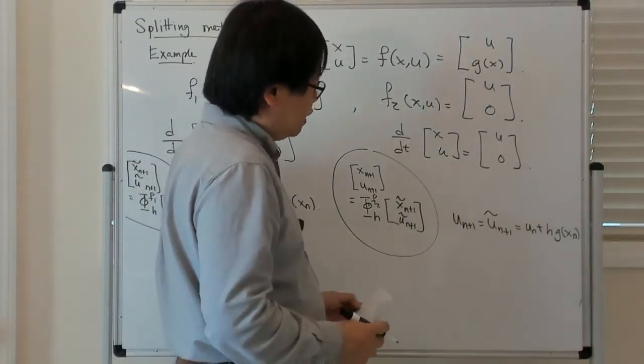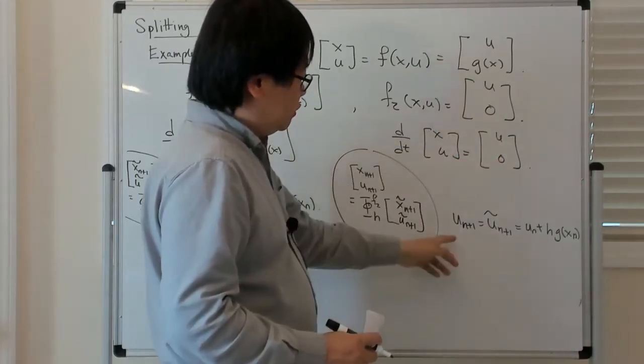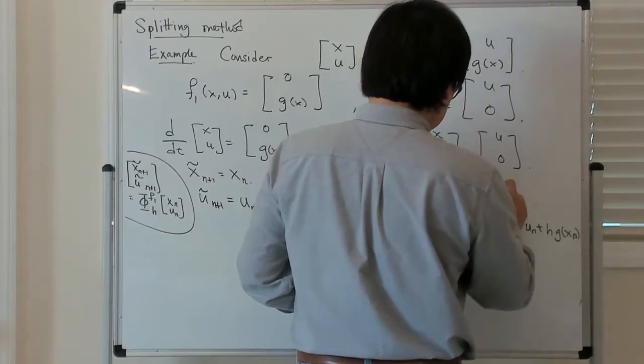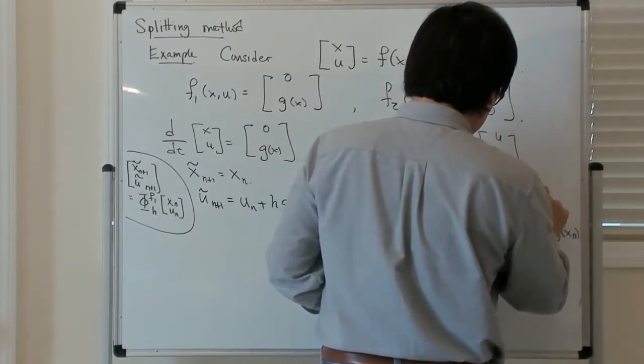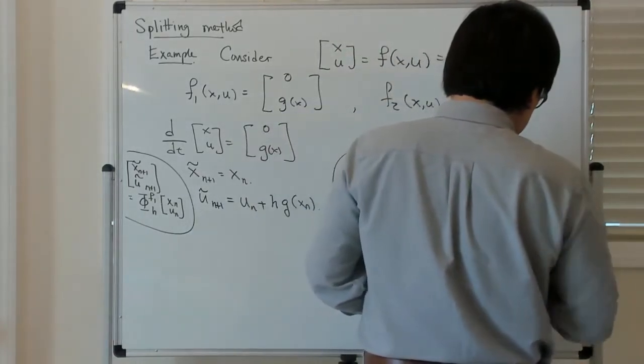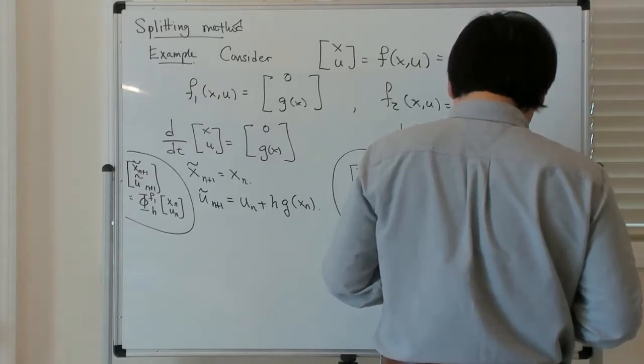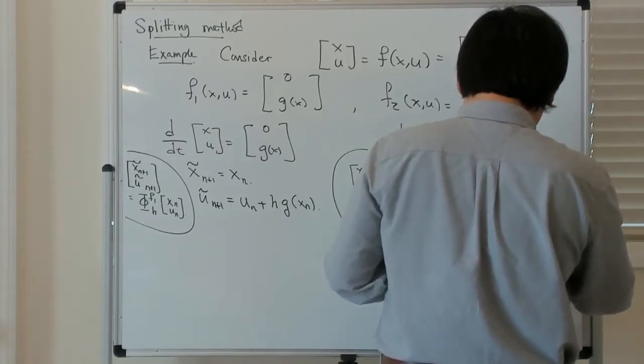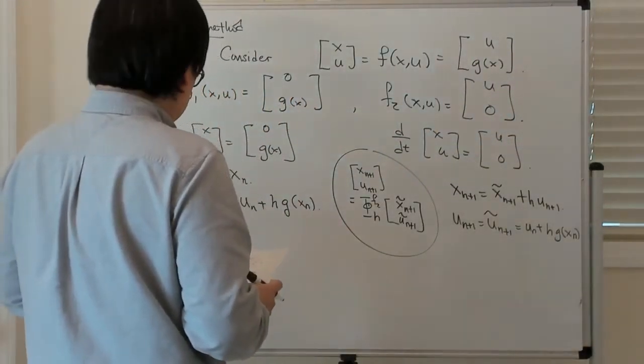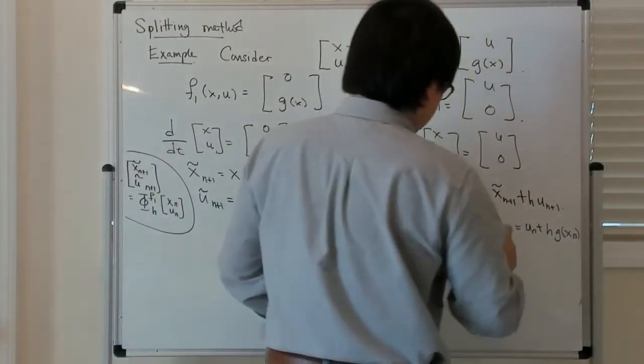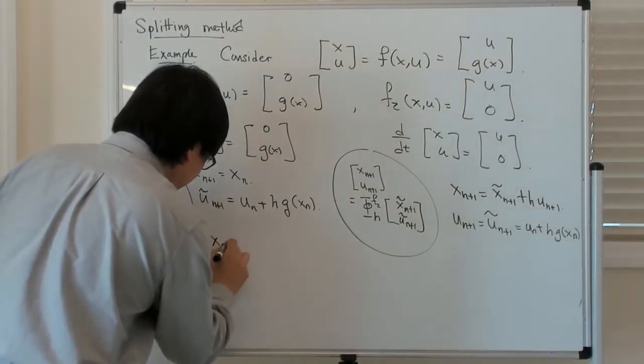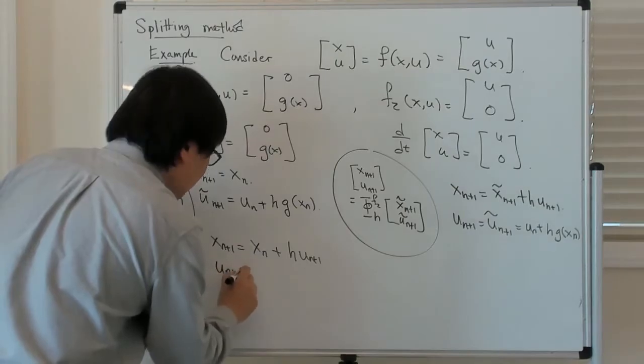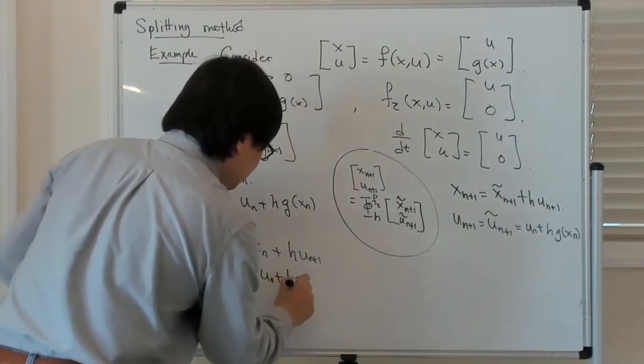Once we've figured that out, x is evolving by this u, but u is a constant along this part of the flow, so x n plus 1 is equal to x n plus 1 tilde plus h times u, which is constant, so this is the u n plus g h x n term. Let's just call it u n plus 1. And x n plus 1 tilde is x n, so our whole thing simplifies to the condition that x n plus 1 is equal to x n plus h u n plus 1, and u n plus 1 is equal to u n plus h g x n.